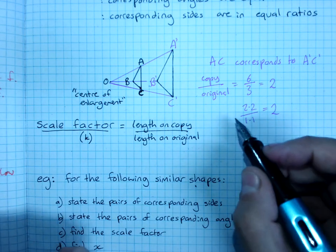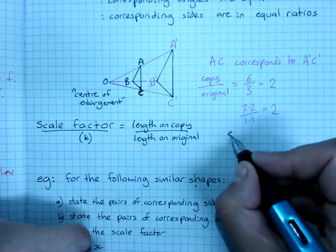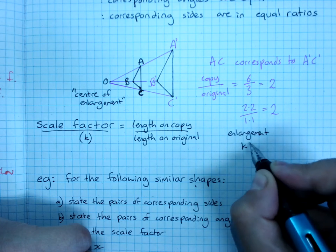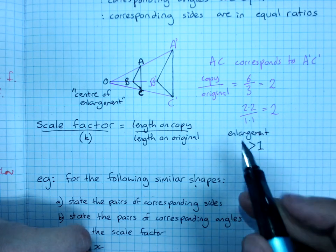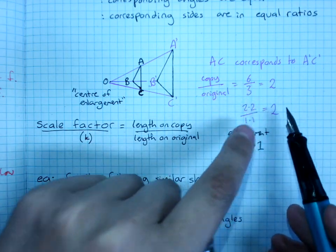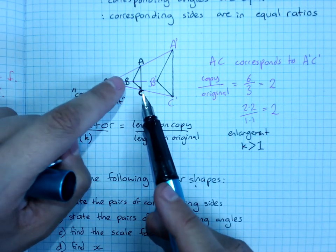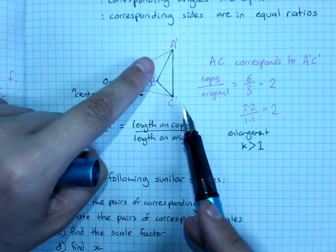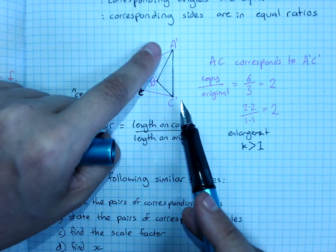Now, if it's an enlargement, K will be greater than one. So this is the enlargement factor, two, which says every length on this shape has been multiplied by two to get this enlarged shape.